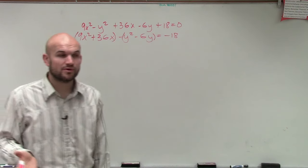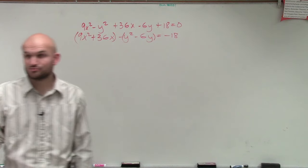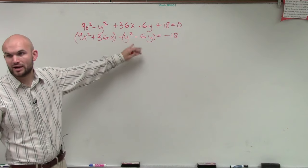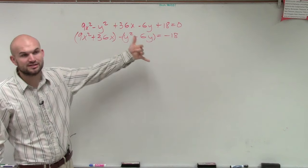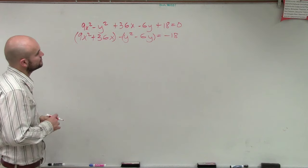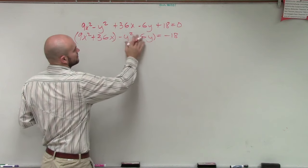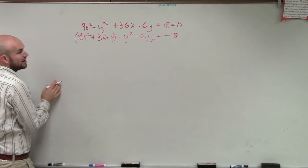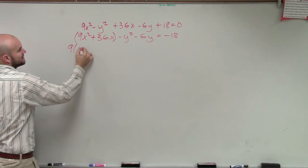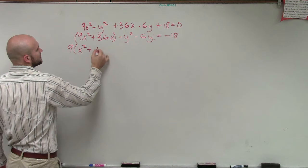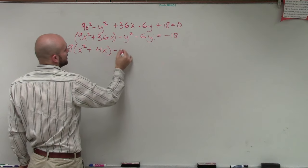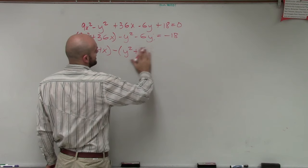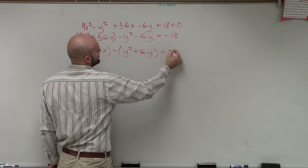Now remember, when completing the square, this problem is a subtraction — hyperbola is a subtraction of the two distances. Actually, I do need to factor out the negative 1. So here I factor out the 9 from the x terms, and I'm left with x squared plus 4x. Here I factor out a negative 1, and I'm left with positive y squared plus 6y equals negative 18.